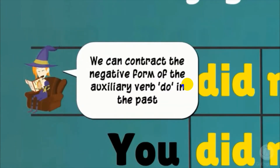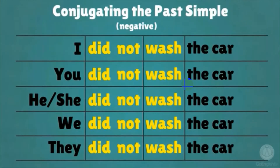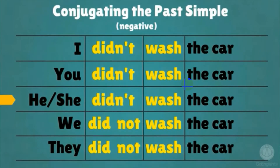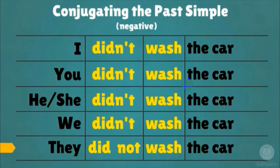We can contract the negative form of the auxiliary verb 'do' in the past. I did not → I didn't. You did not → you didn't. He did not / She did not → he didn't / she didn't. We did not → we didn't. They did not → they didn't.